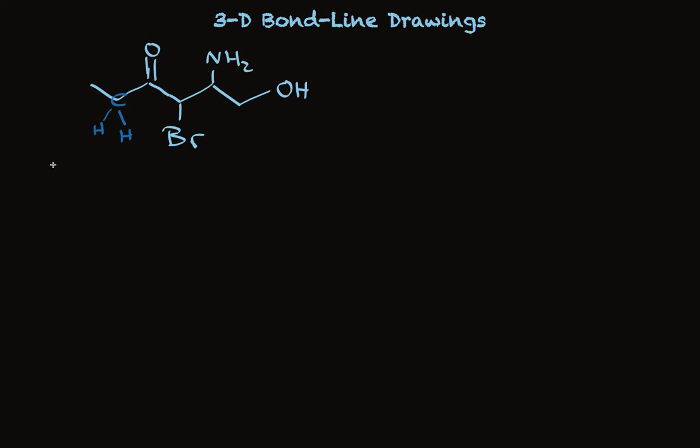Three of these atoms, the carbon and two others, can be in the same plane, are in the same plane. The other two are not. So we need to draw these things in a bit different way.